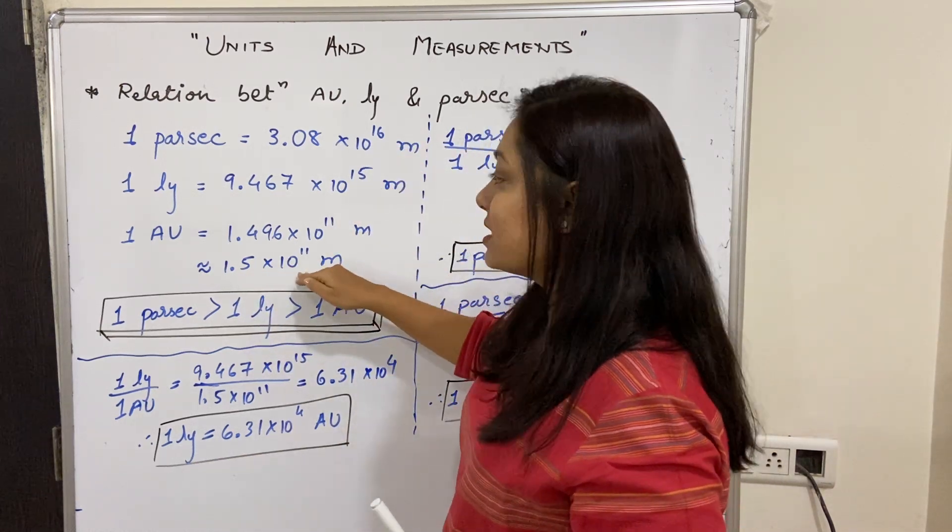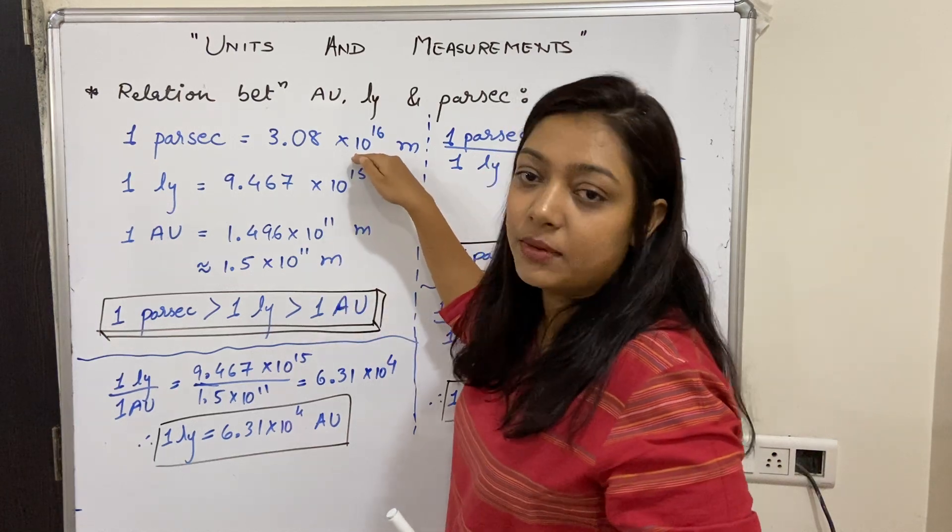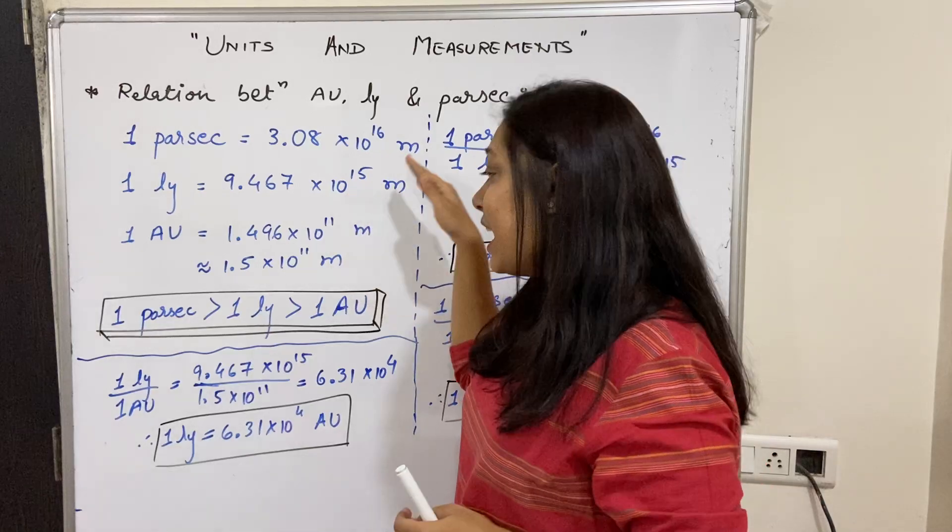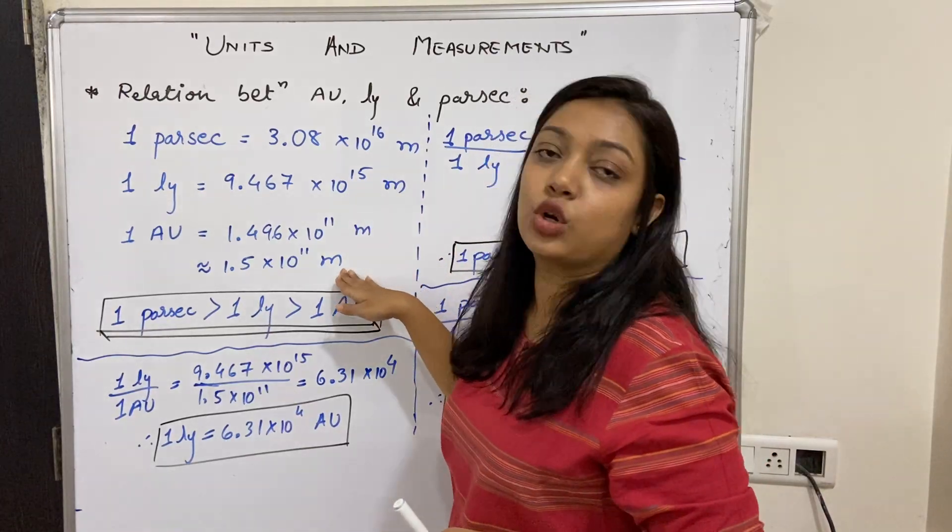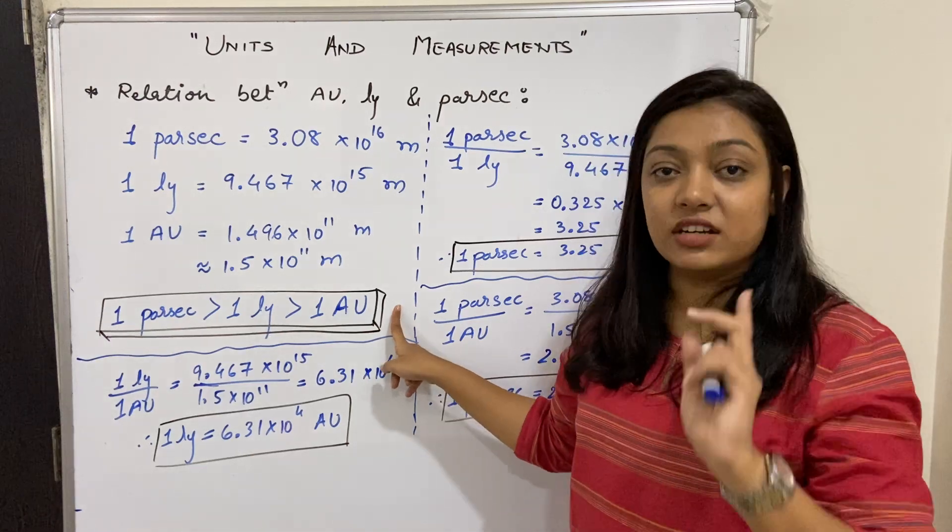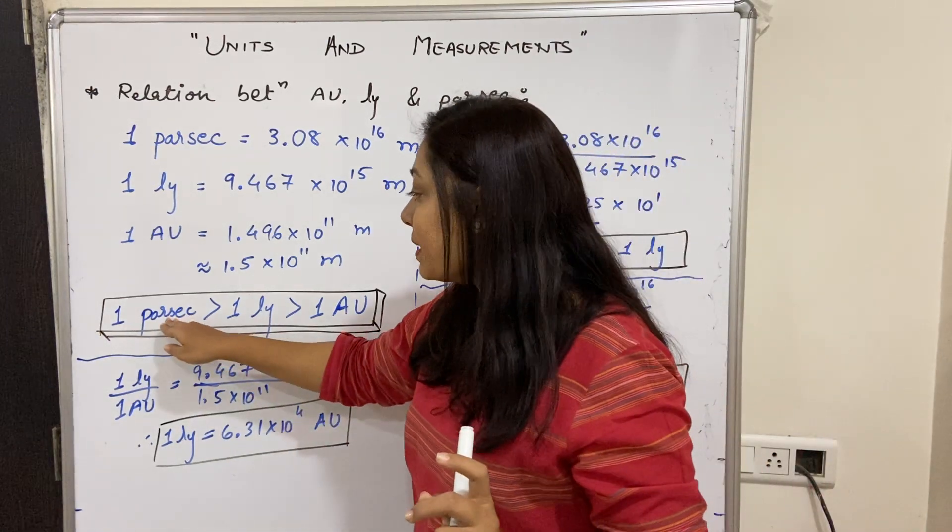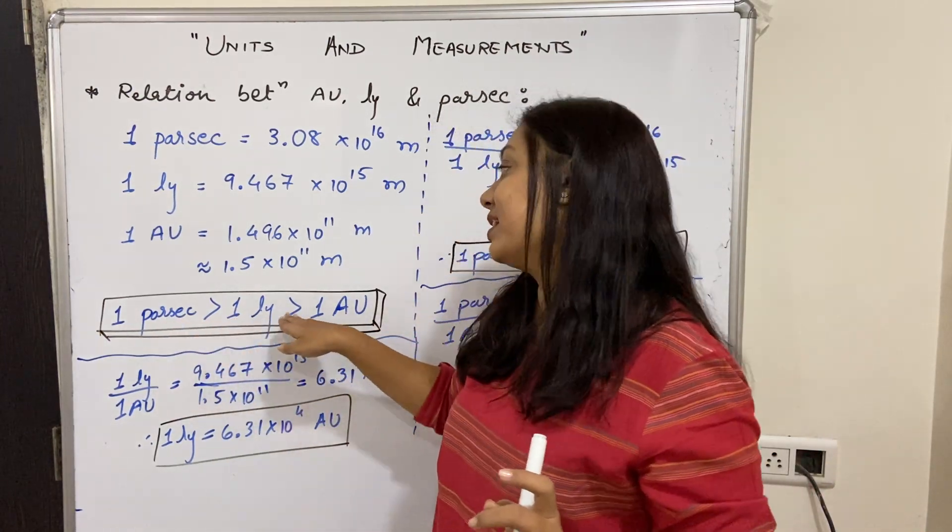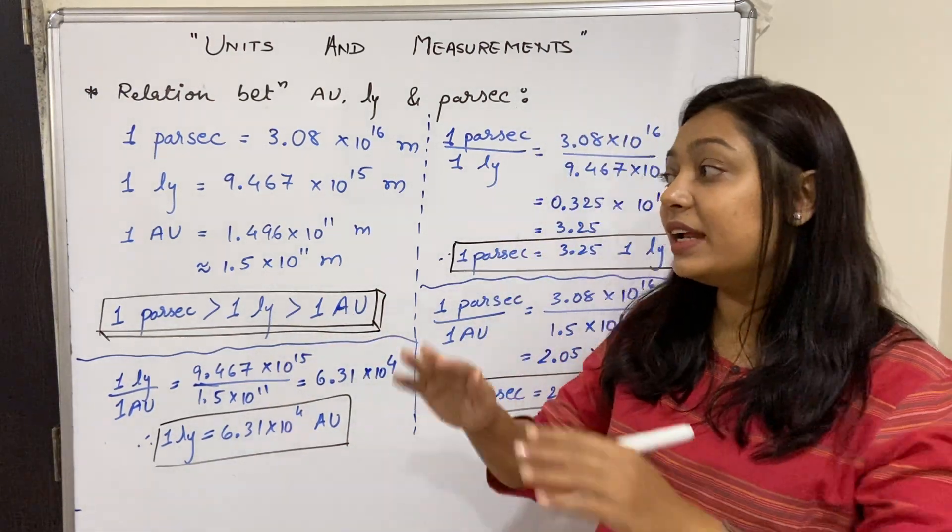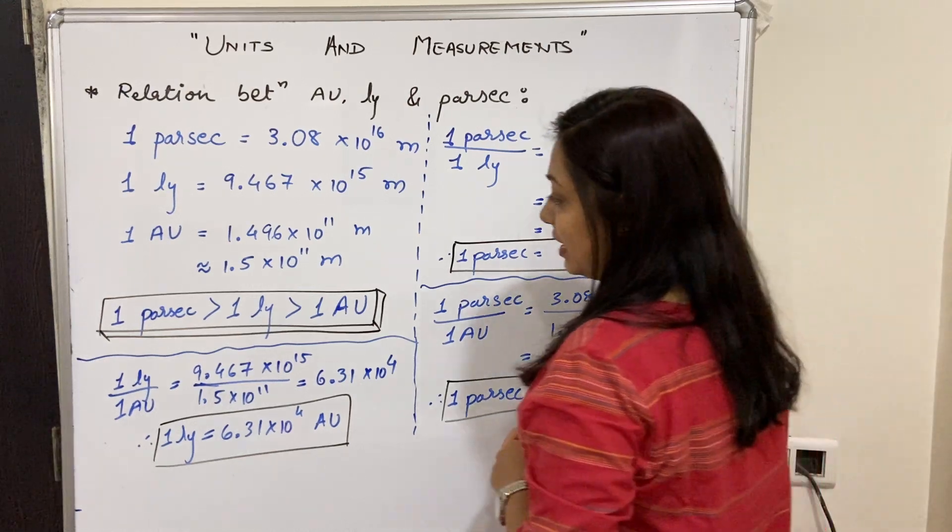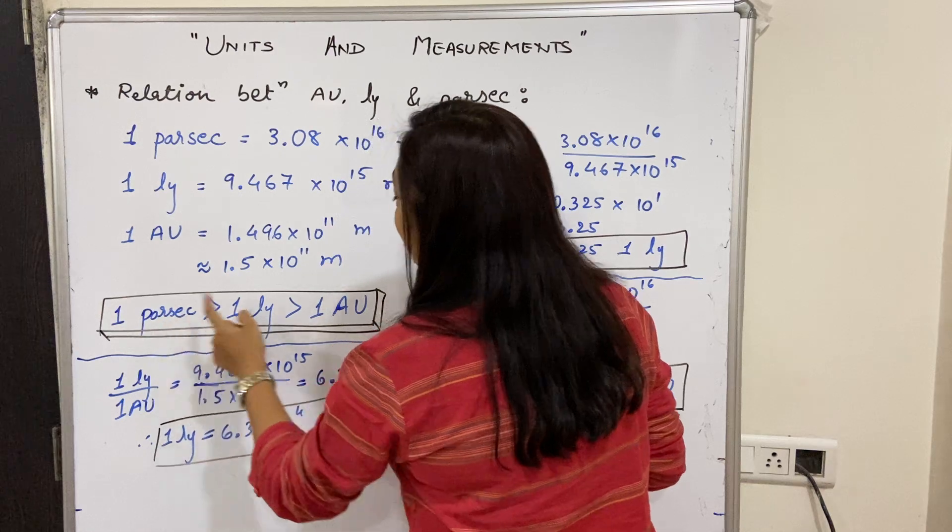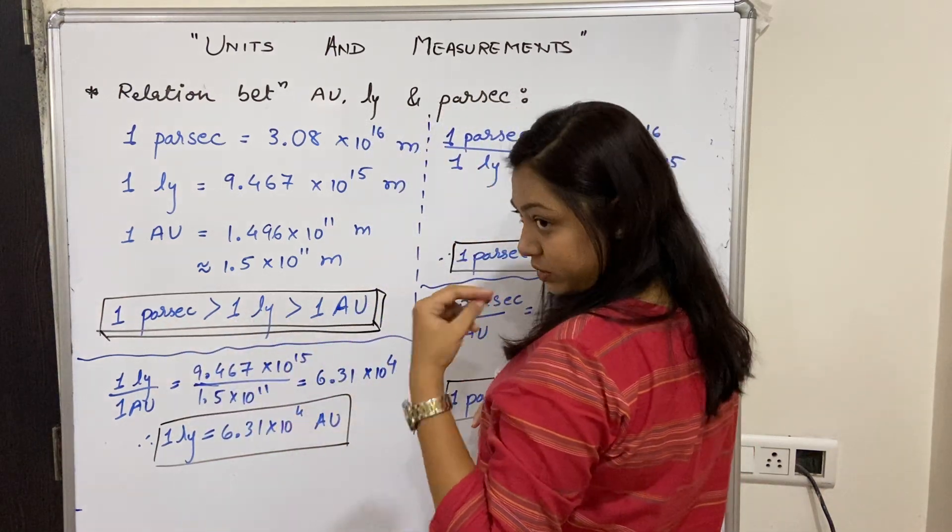From the powers, we can tell that the largest is parsec, then comes light year, and the smallest is astronomical unit. So this is the final relationship we have understood: one parsec is greater than one light year is greater than one astronomical unit. Now we will see individual comparisons between parsec and light year first, then parsec and astronomical unit.